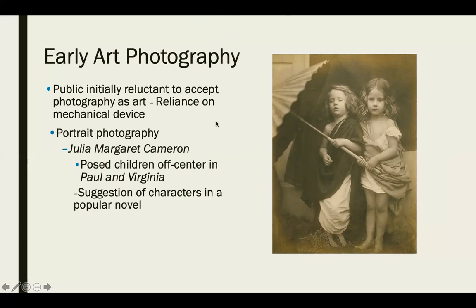Early art and photography: the public world was initially reluctant to accept photography as an art medium, relying on it more as a mechanical device and technological advance. We do start to see some early portrait photographers leaning into a conceptual side. Julia Margaret Cameron was one of those — she used photography for storytelling and to depict scenes from literature, such as this scene of two children, Paul and Virginia, from a popular novel at the time.